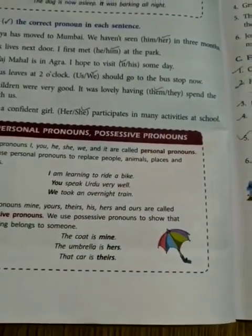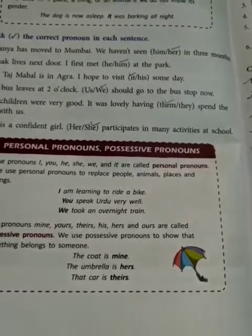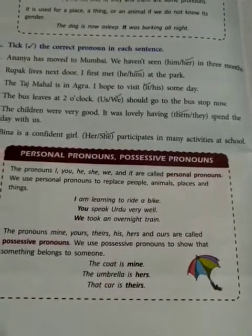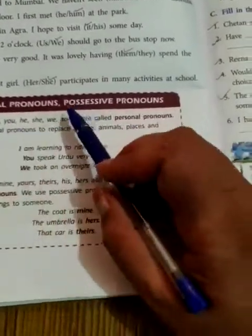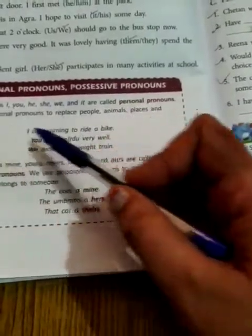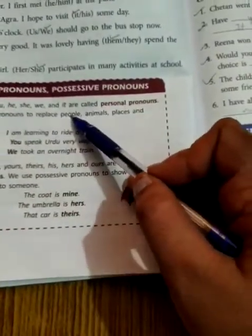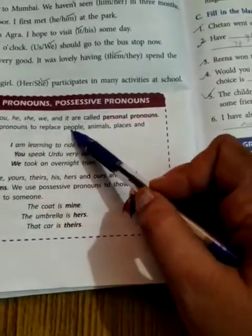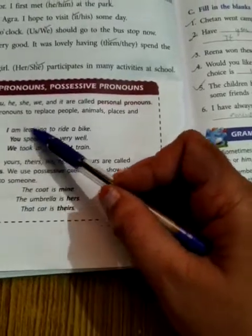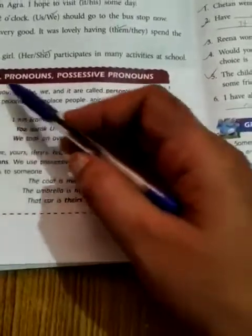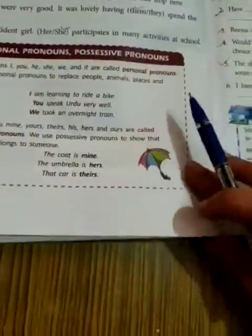Students, you have to learn these words. Rules and regulations described in Hindi grammar, English grammar, math — some subjects require you to not only understand but also memorize the language. We use personal pronouns to replace people, animals, places, and things. (Personal pronoun का use people, animal, place और thing को replace करने के लिए किया जाता है।) For example: 'I am learning to ride a bike' — here 'I' is a personal pronoun. 'You speak very well' — 'you' replaces a person. Personal pronouns are: I, you, he, she, we, and it.